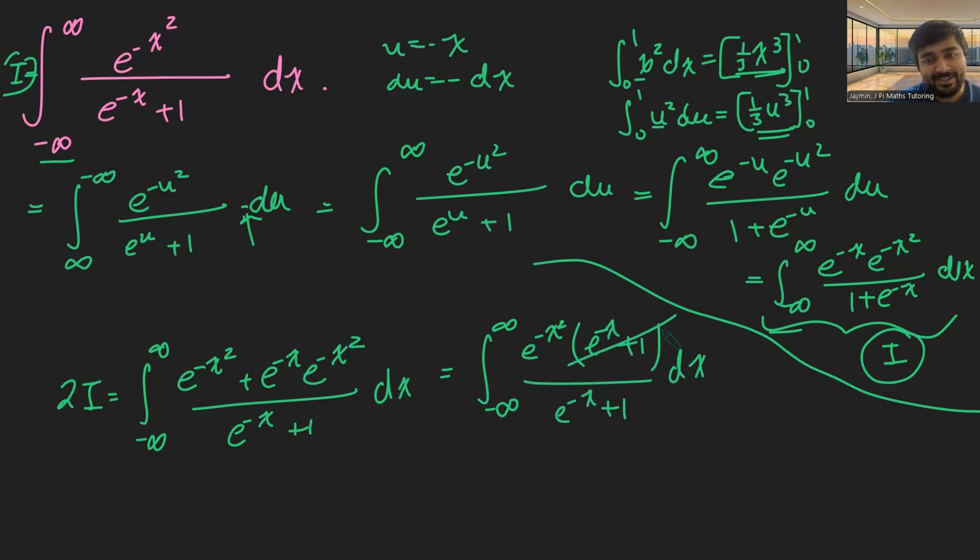Those guys there cancel out. And I'm just left with the integral from minus infinity to infinity of e to the minus x squared dx. And this is the famous Gaussian integral. And so this is equal to the square root of pi.